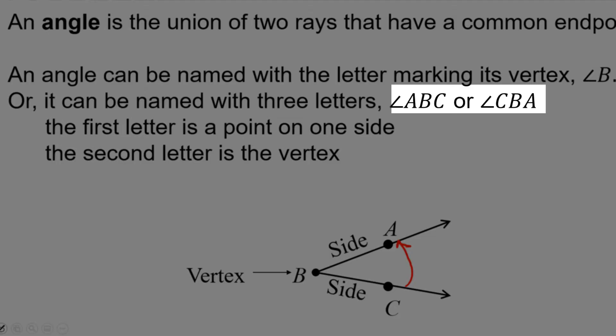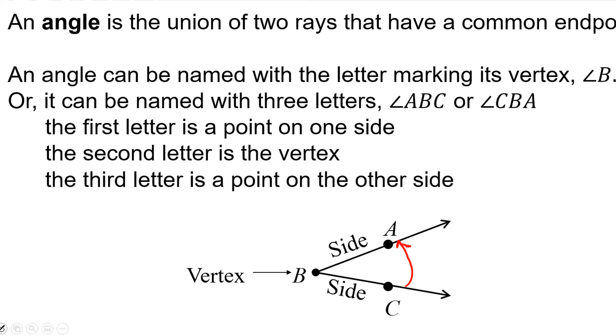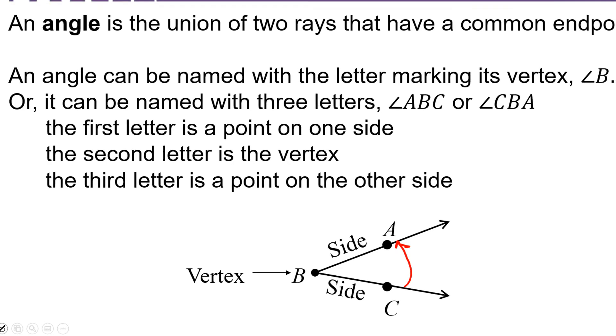That's why the letter B is in the middle of both of those names, angle ABC and angle CBA. The third letter is a point on the other side, whichever side you haven't listed yet.